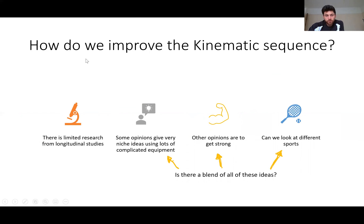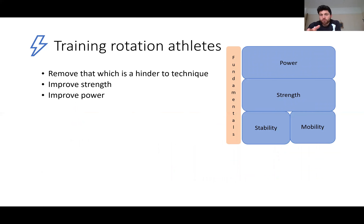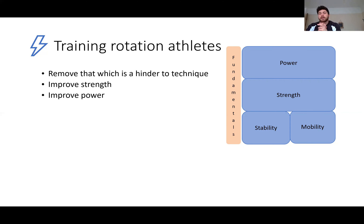How do we improve the kinematic sequence? There's limited research from longitudinal studies. Some opinions give very niche ideas — bands everywhere trying to move different segments at different times. Other opinions say completely ignore it — the player will be able to do it if they're strong enough. I'd like to think there's a blend of all these ideas. My framework is built around three principles: remove that which is a hindrance to technique, improve strength, and then improve power on top of that. Fundamentals always flow upward — stability, mobility as building blocks, then strength, then power.